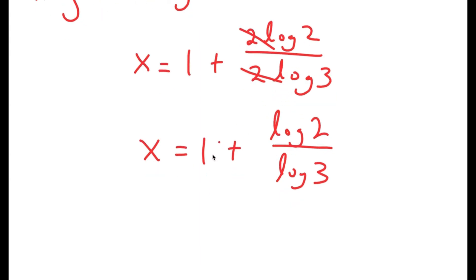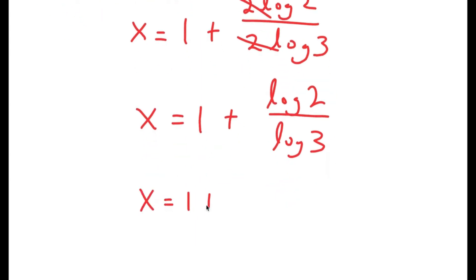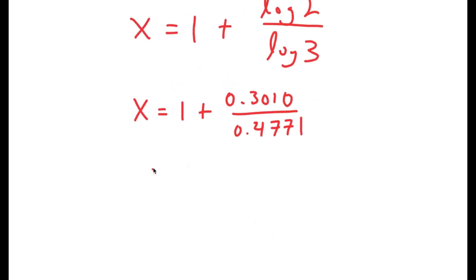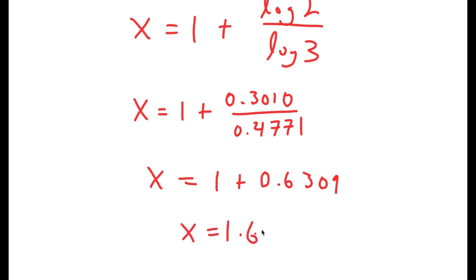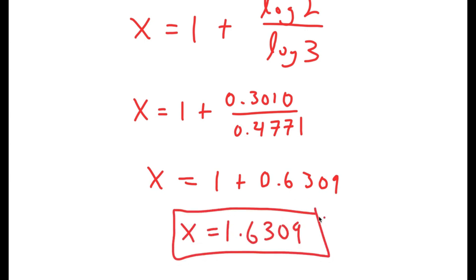Log 2 is equal to 0.3010 and log 3 is equal to 0.4771. So if I divide these two, I get x equals 1 plus 0.6309, meaning x is equal to 1.6309. So this is my answer. Thank you.